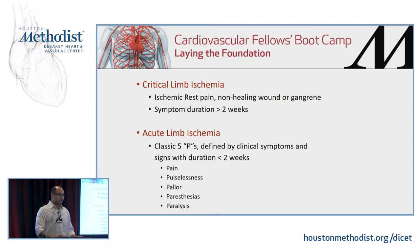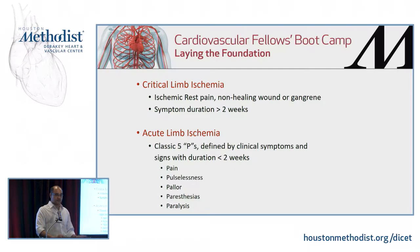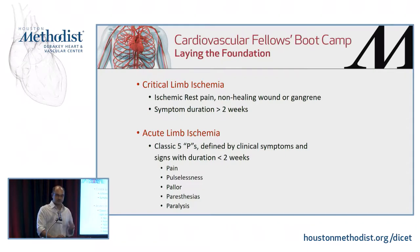Critical limb ischemia is ischemic rest pain or any ulcer or gangrene, with symptom duration of more than two weeks. Acute limb ischemia is the classic cold leg - we use the classic five P's from medical school: pulselessness, pallor, and paresthesia. The paresthesia is very classic and you have to elicit that because it's the first sign that comes in - nerves are much more sensitive than the skin.